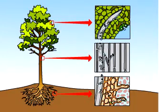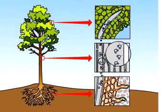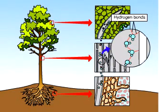Transpiration exerts a pull that is relayed downward along a string of water molecules from leaf to root. Hydrogen bonds cause water molecules to stick together, a phenomenon called cohesion.